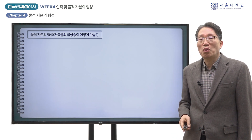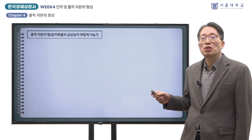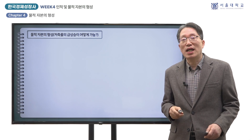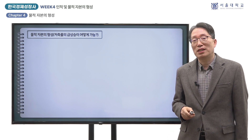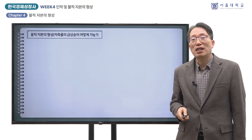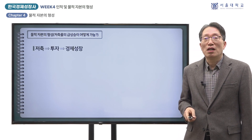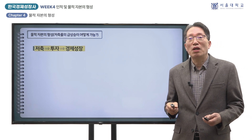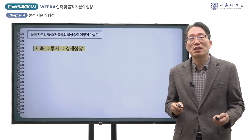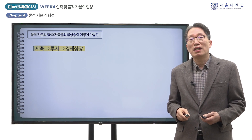한국의 고도성장기에 나타난 투자율의 급상승은 결국 저축률로 뒷받침 되었는데, 그 저축률의 급상승이 어떻게 가능하였는지를 규명할 필요가 있습니다. 저축률의 증가가 투자율을 높여 경제성장을 가져왔다고 보는 것이 일반적이지만, 인과관계를 반대로 생각할 수도 있습니다.